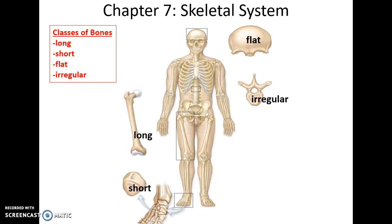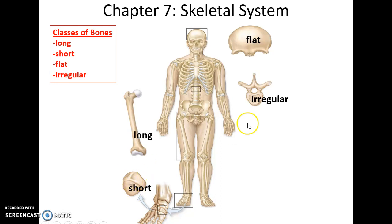Bones come in four kinds of classifications. You have long bones, which are much longer than they are wide. You have short bones, that are about as wide as they are long. You have irregular bones that have an odd shape to them, and then you have flat bones that are relatively thin.